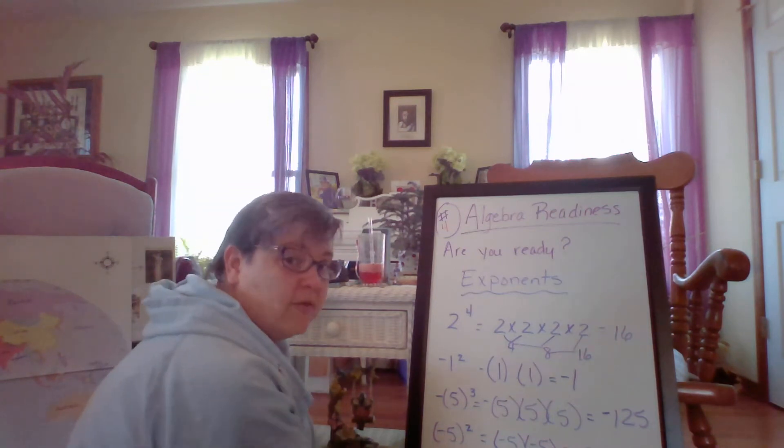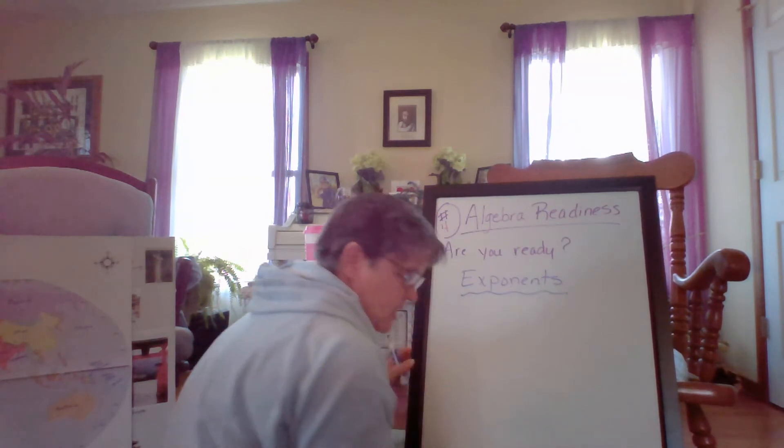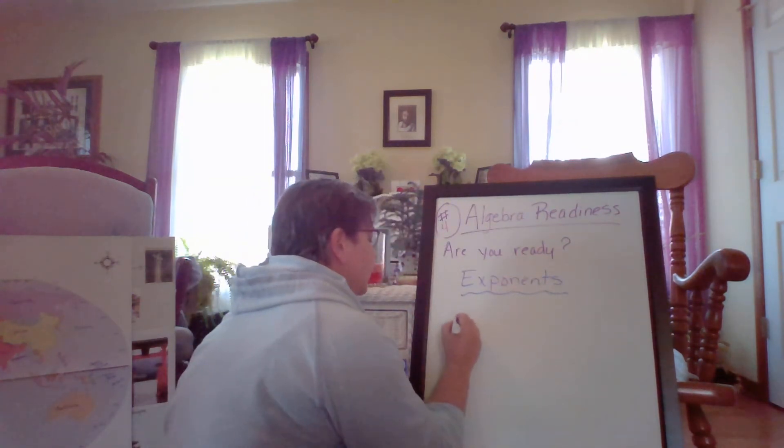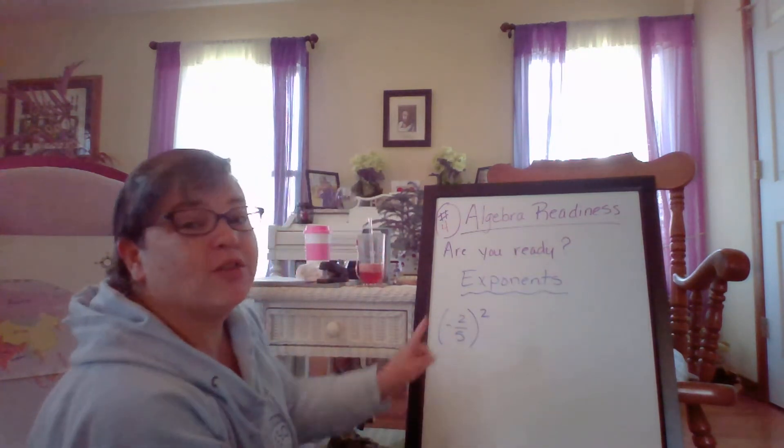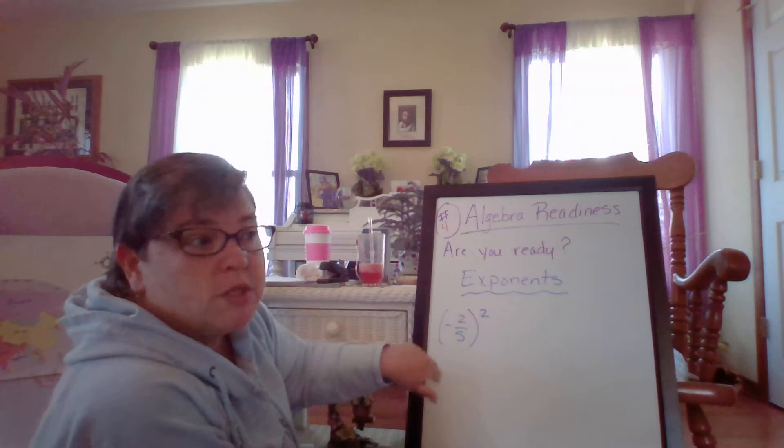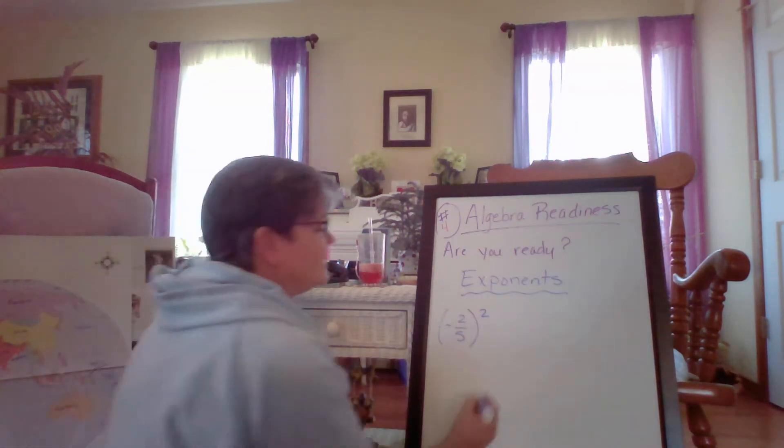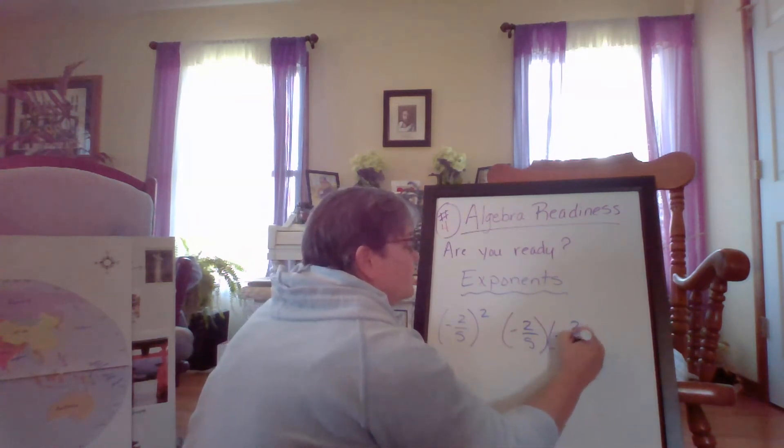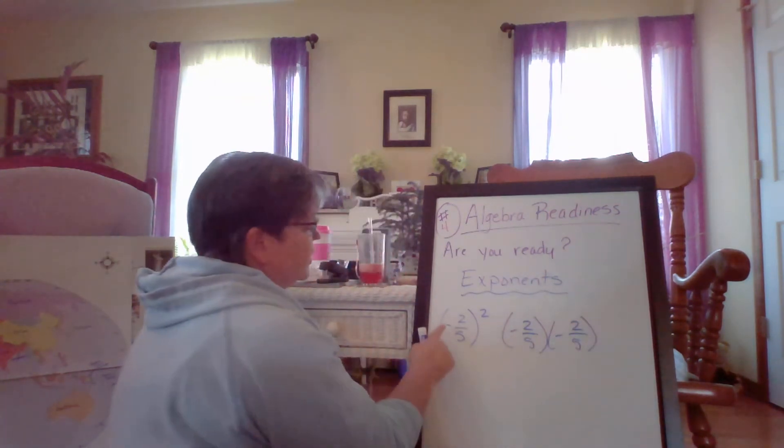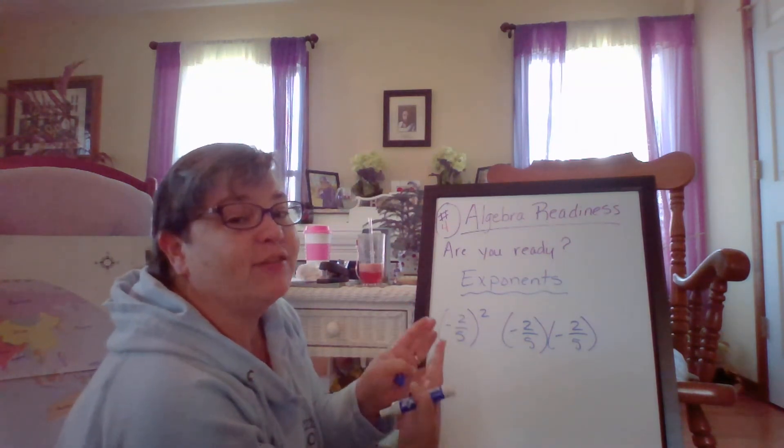Let's do one more of these with a fraction. Yay! So we will have negative two-fifths, and that is going to be squared. If I put a three there, it's called cubed. So this basically means negative two-fifths times negative two-fifths. And you're like, the negative is inside the parentheses, so we know that we're going to bring the negative along with the number.